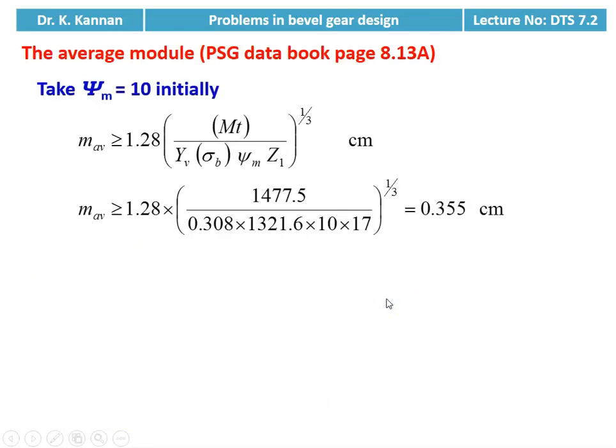Then we calculate the average module. For ψm = 10 (initially assumed), the equation is available on page number 8.13A: m_avg ≥ 1.28 × [MT(design) / (YV × σB × ψm × Z1)]^(1/3). Substituting numerical values: m_avg ≥ 1.28 × [1477.5 / (0.308 × 1321.6 × 10 × 17)]^(1/3) = 0.355 centimeter.